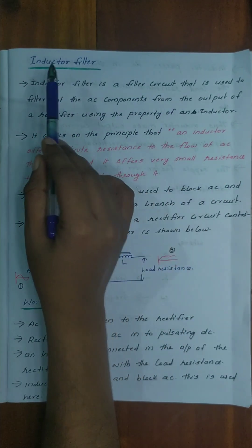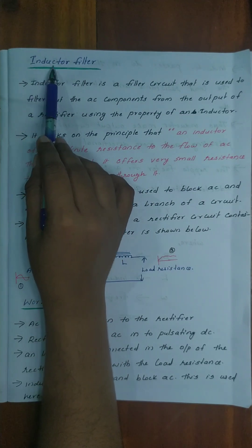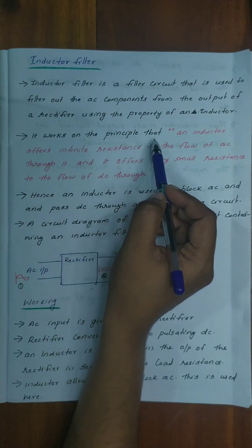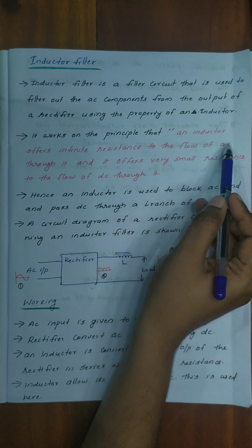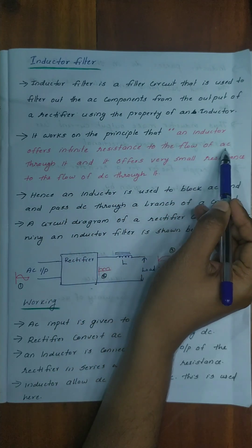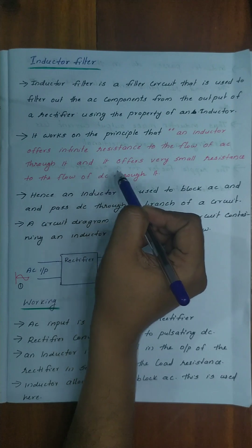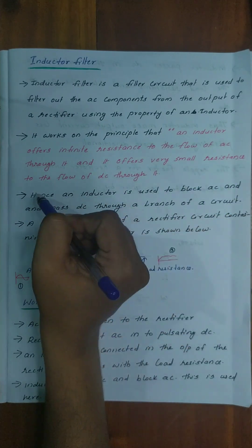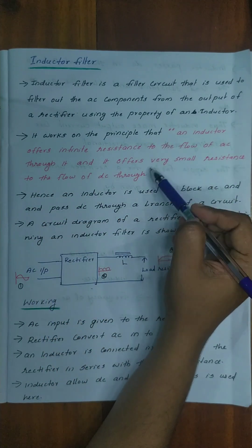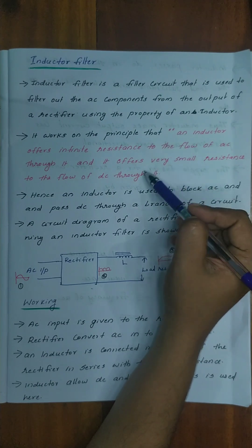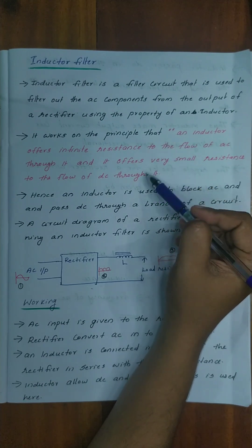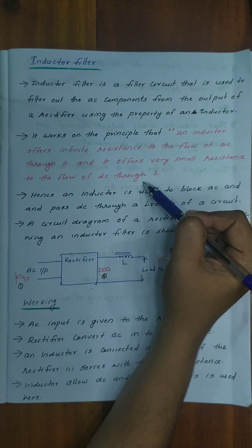It works on the principle that an inductor offers infinite resistance to the flow of AC through it, and it offers very small resistance to the flow of DC through it. This principle is what takes place in the inductor filter.